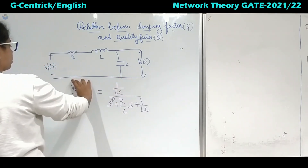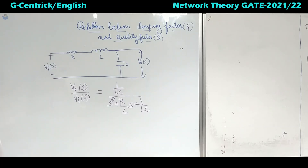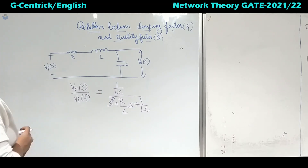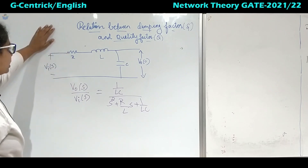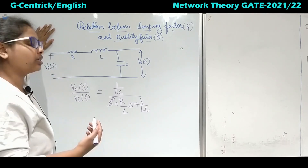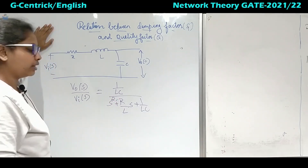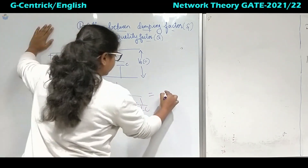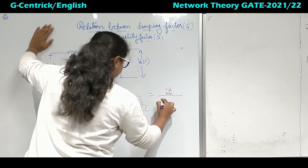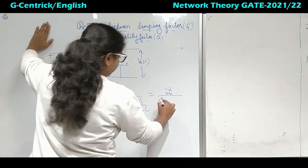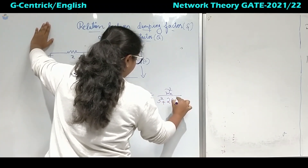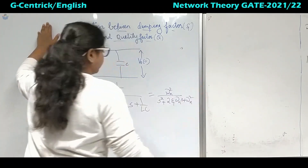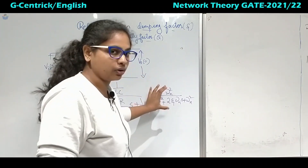The output voltage across the capacitor gives 1/LC in the numerator. The input is the combination of all three elements in the S domain. This is a second-order system because the highest power of S is 2. In generalized control system form, this is written as omega_N squared divided by (S squared plus 2·zeta·omega_N·S plus omega_N squared).